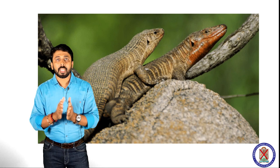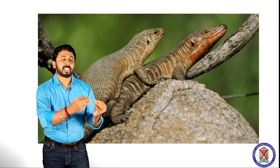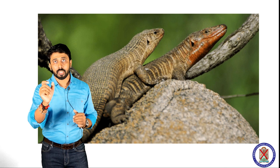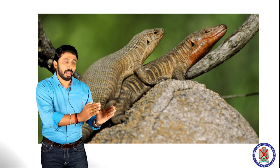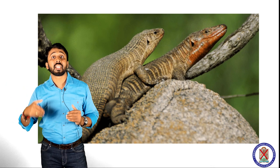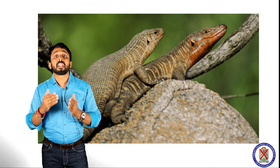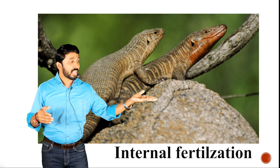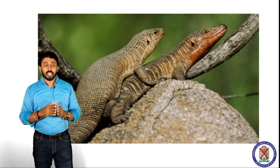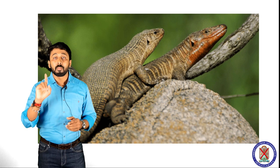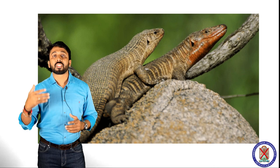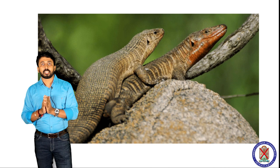In the case of reptiles, they developed a specialized organ for transferring male gametes into the female reproductive tract, known as the copulatory organ. Through the copulatory organ, the male transfers gametes to the female genital tract, and fertilization takes place inside the female body. That kind of fertilization is known as internal fertilization — a better evolved strategy — where fertilization occurs inside the female body using the copulatory organ.